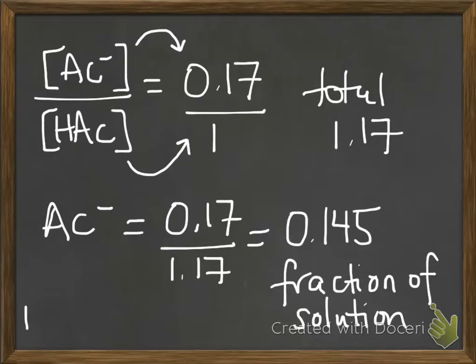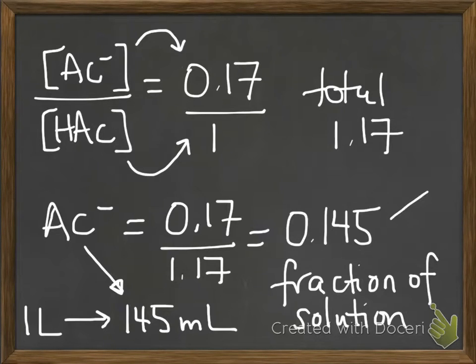Your solution is 1 liter, so that means you have 145 mils of acetate. They actually calculate 150 mils in their solutions because they round to 0.15 here. But I'm not sure why they did that. It's more accurate to say 145 mils.